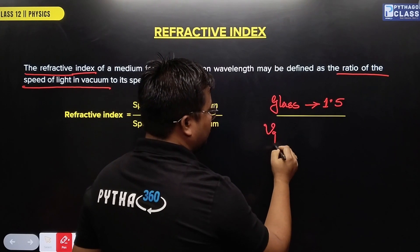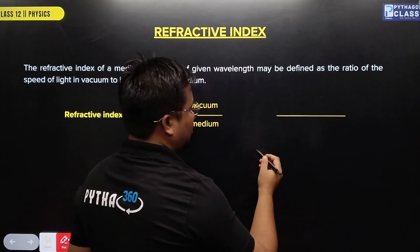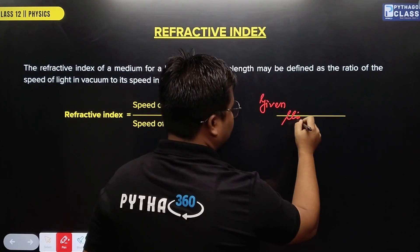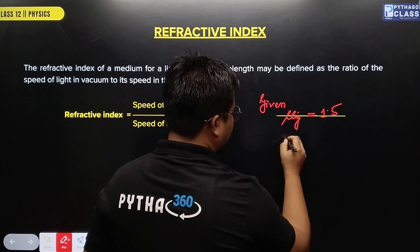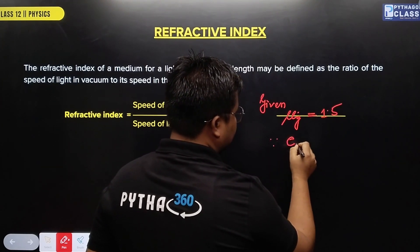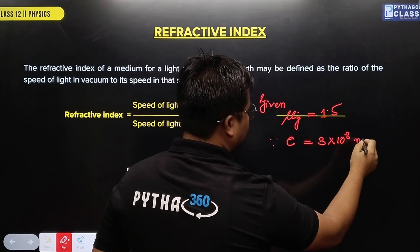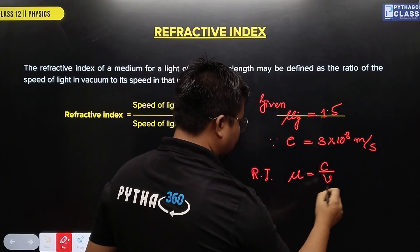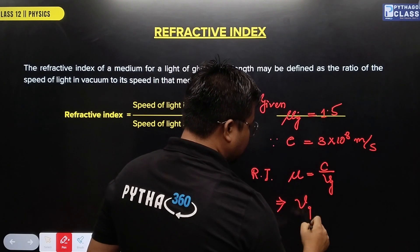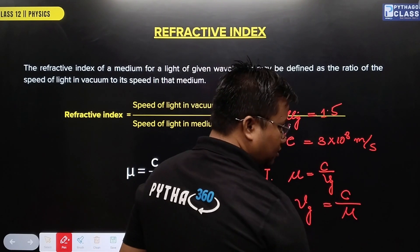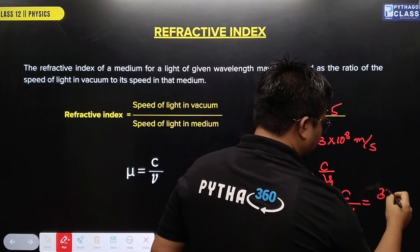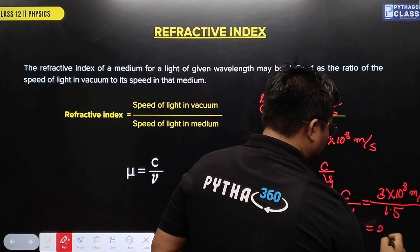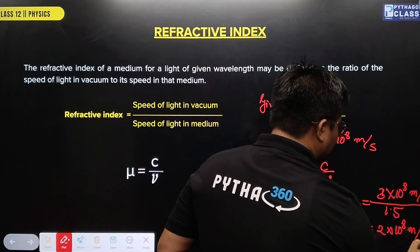For example, the velocity of light in glass: given that mu is equal to 1.5, and since C is equal to 3 into 10 to the power 8 meters per second, the refractive index mu equals C by V. So V equals C by mu, which is 3 into 10 to the power 8 divided by 1.5, giving 2 into 10 to the power 8 meters per second.